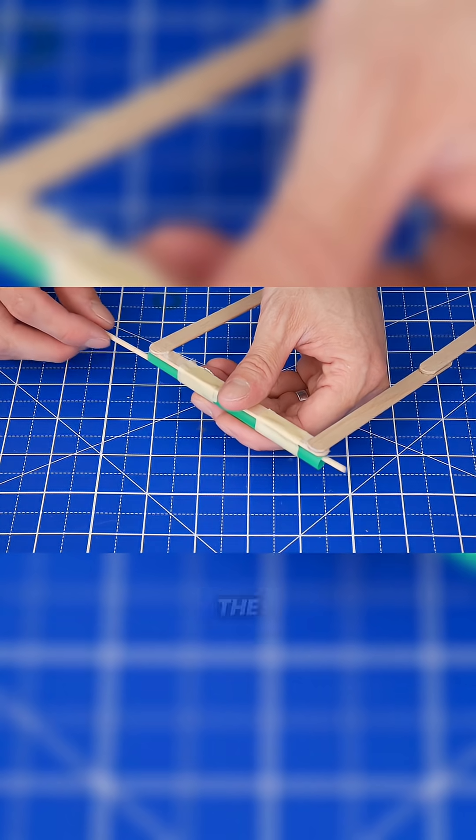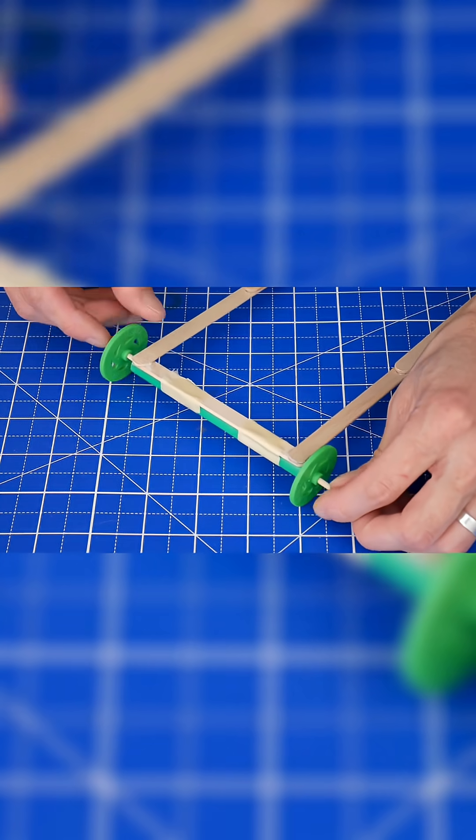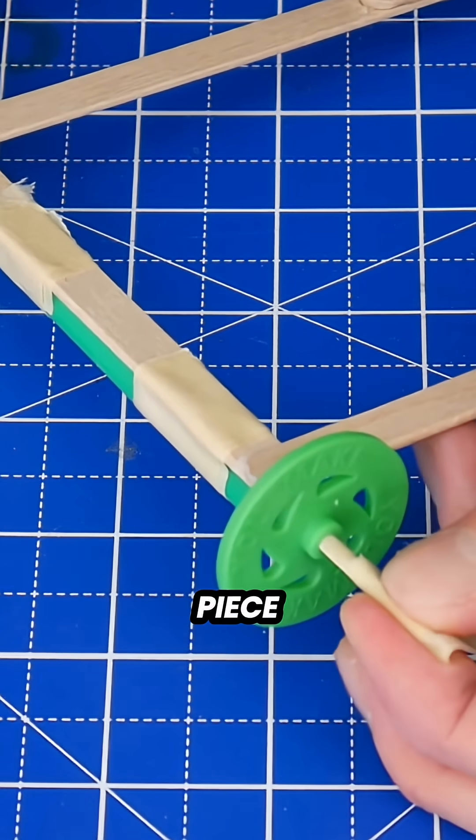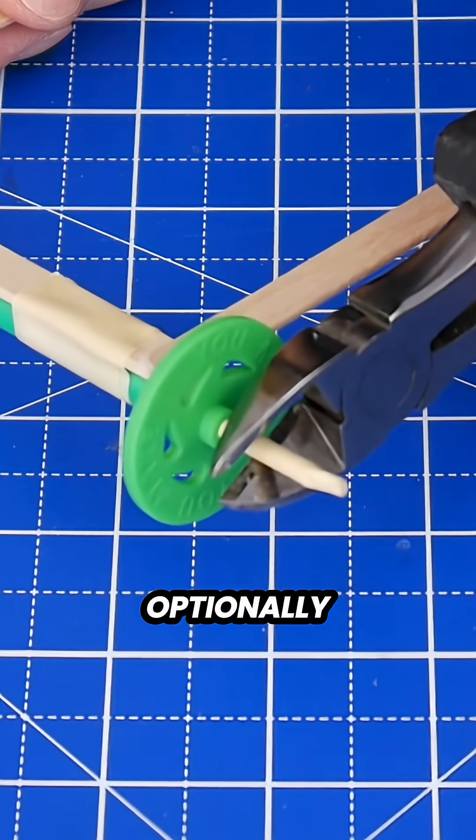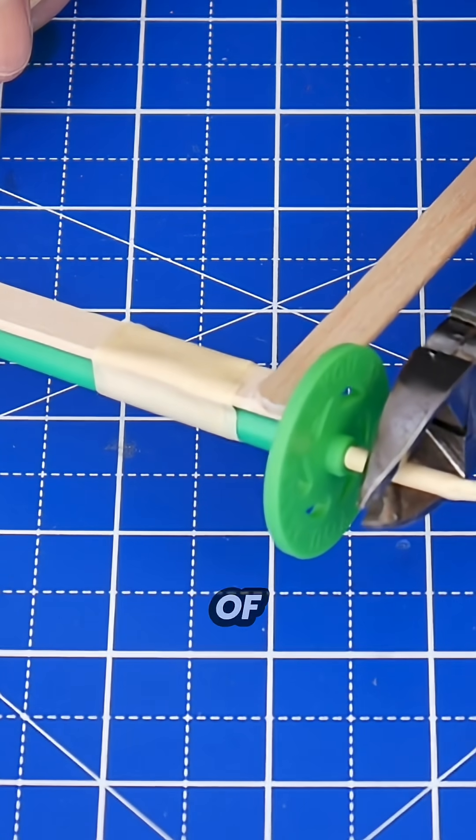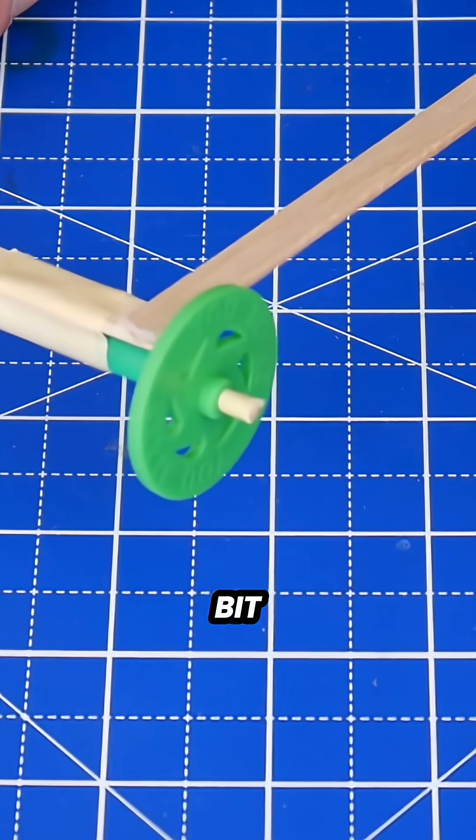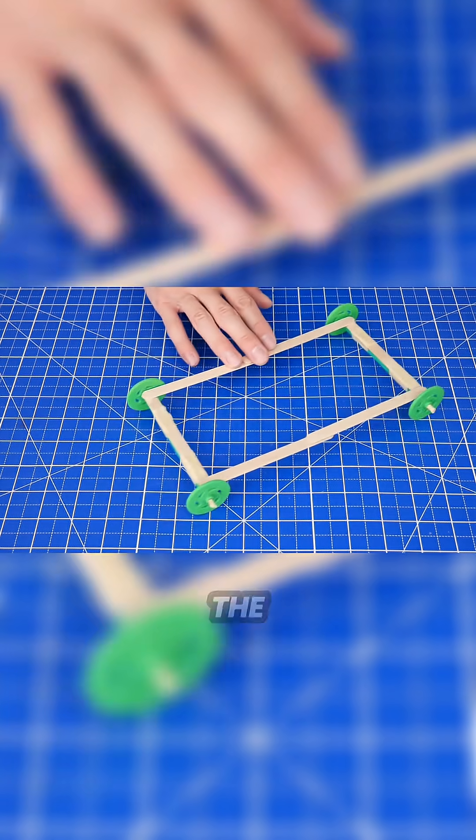Put the dowel through the straw and put the wheels on the ends. Wrap a small piece of tape around the ends of the dowel so the wheels don't fall off. Optionally, you can cut off the extra dowel with a pair of wire cutters so that it looks a little bit better. And repeat on the other side.